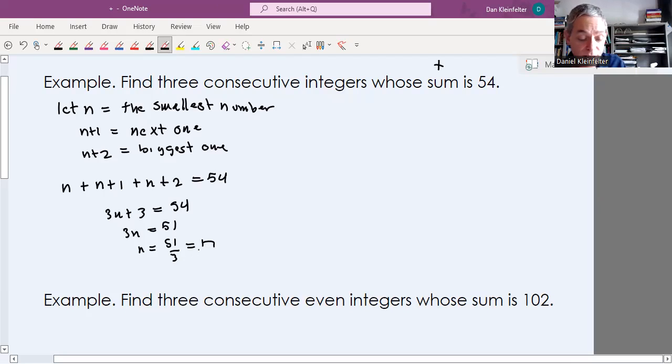And so our smallest number is 17. The next one is one more, or 18. The one after that is 19. The numbers are 17, 18, and 19. Okay, so that takes care of that example.